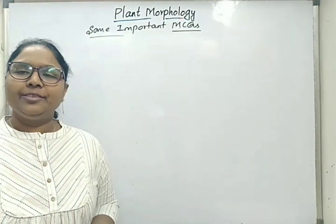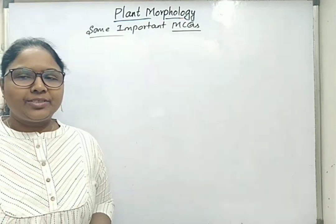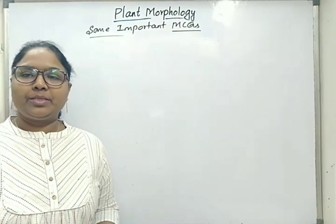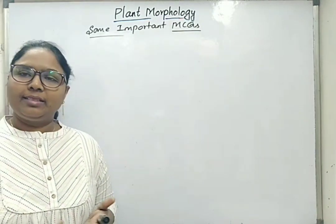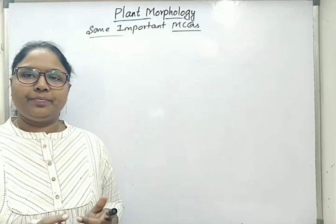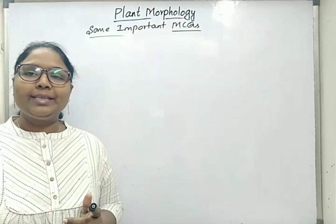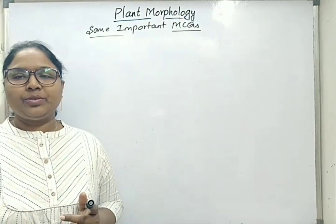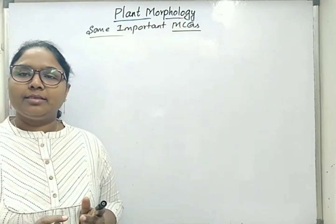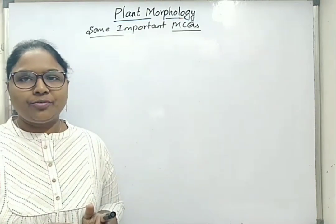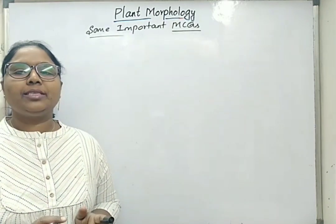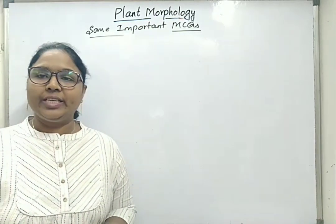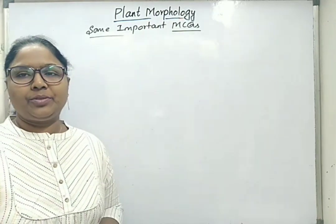Hello students. Now we will see about different terms like trimerous, tetramerous and pentamerous types of flowers, which are given terms based on the multiples of 3, 4 and 5. If the flower petals are multiples of 3 then called as trimerous types of flowers. If the petals are multiples of 4 then called as tetramerous types of flowers. If the petals are multiples of 5 then called as pentamerous types of flowers.